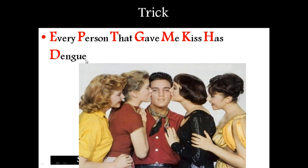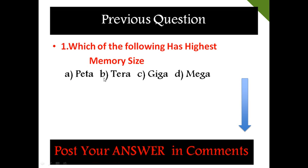Try to say out this sentence three to four times so you can easily remember the order of the metric system. Now let us see a previous exam question: 'Which of the following has the highest memory size? Option A: Peta, B: Tera, C: Giga, D: Mega.' If you know the answer, please post it in the comments so I can see that this trick is easy for you.